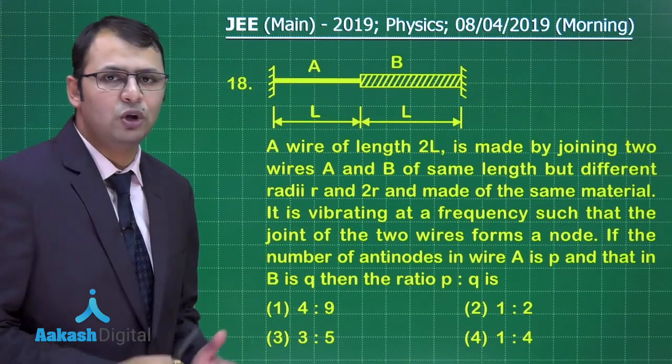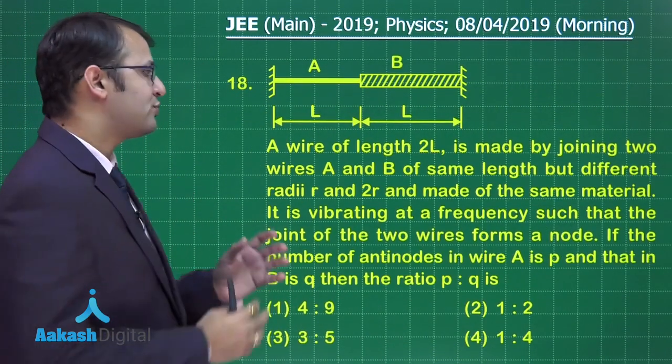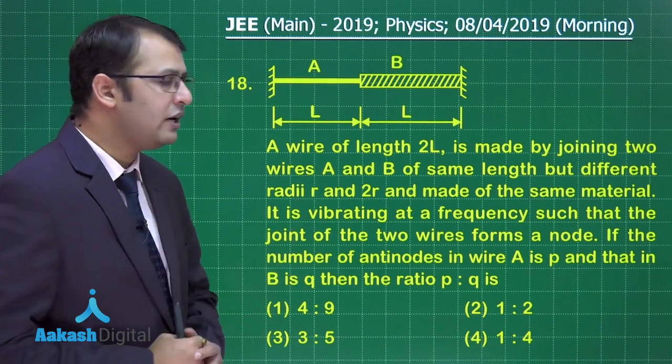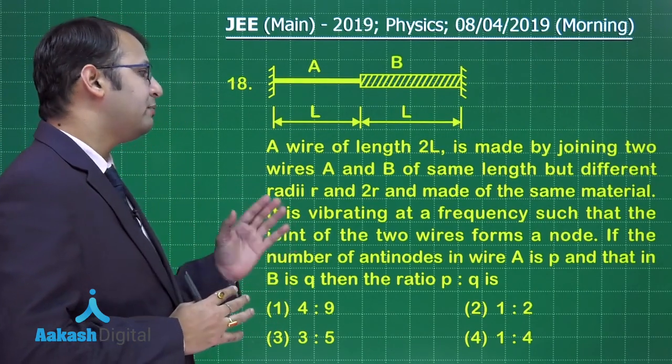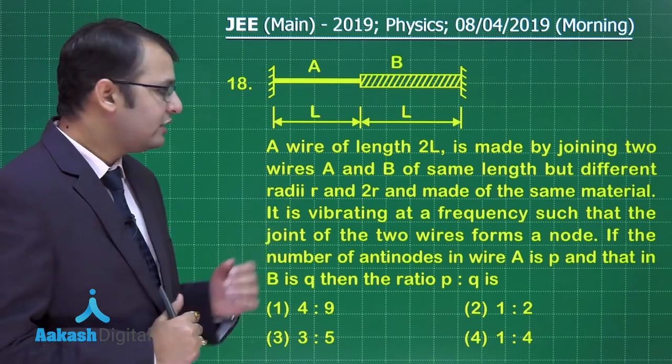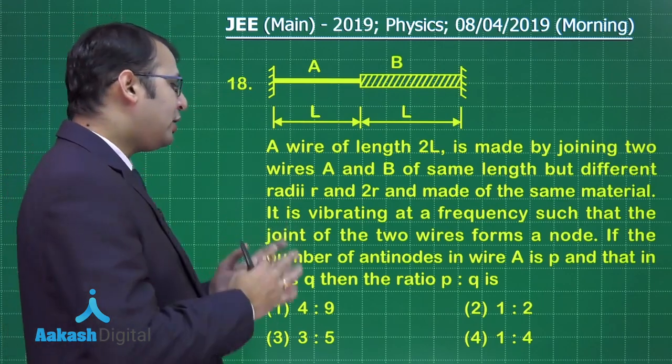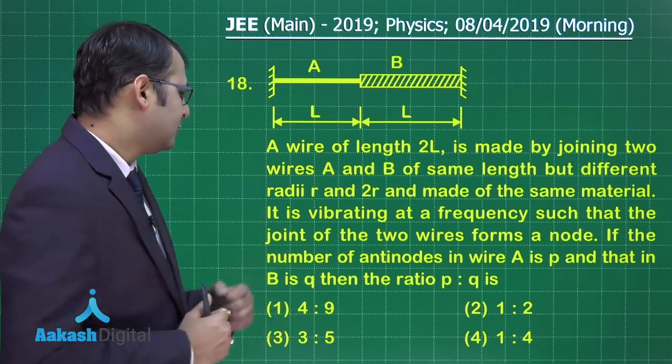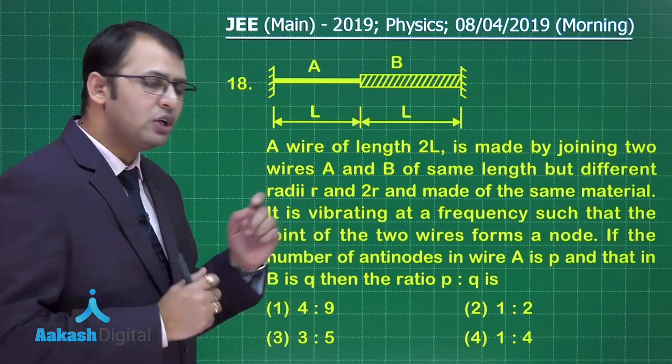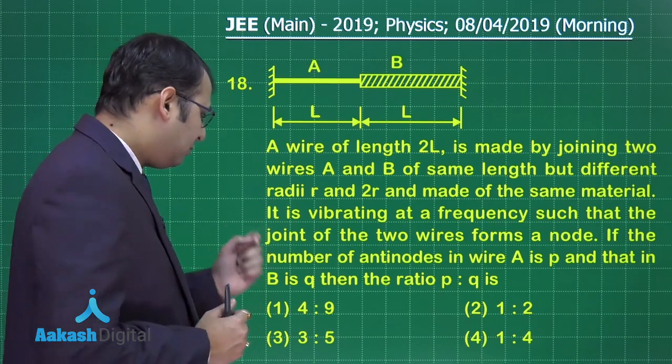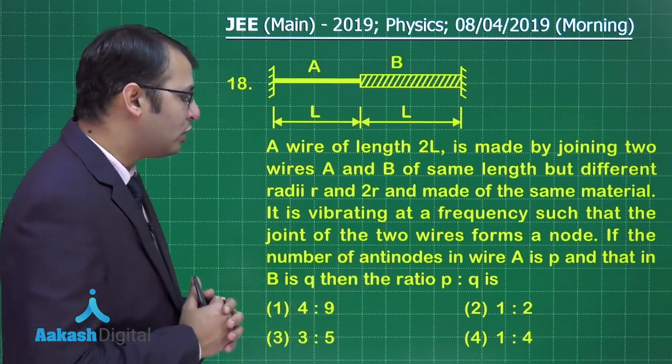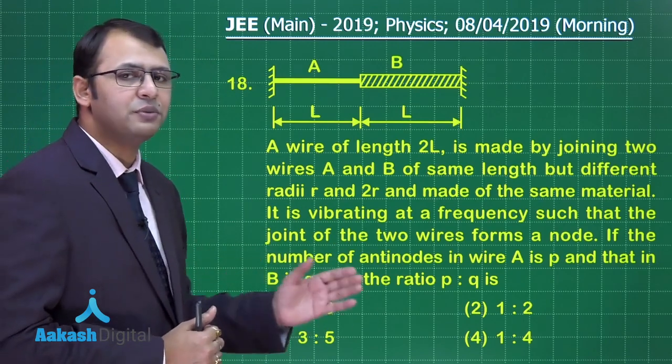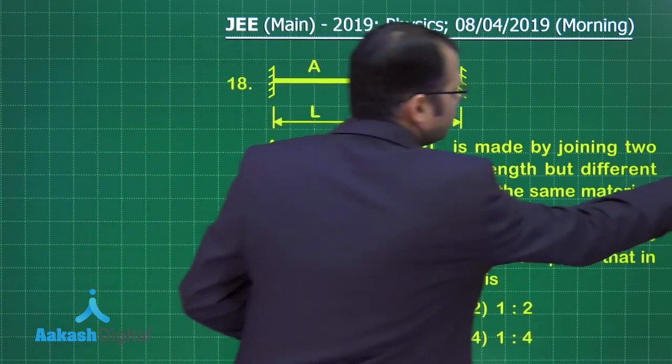So the question you see here belongs to section of mechanics of chapter oscillation and waves. Here a wire of length 2L is made by joining two wires A and B of same length but different radii. They are made of same material. It is vibrating at a frequency such that the joint of the two wires forms a node. If the number of antinodes in wire A is P and the number of antinodes in wire B is Q, then we have to find the ratio of P to Q. Let's start with the solution.